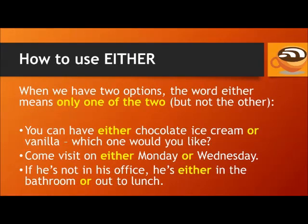First, let's learn how to use either. When we have two options, the word either means only one of the two, but not the other. For example: you can have either chocolate ice cream or vanilla — which one would you like? Come visit on either Monday or Wednesday. If he's not in his office, he's either in the bathroom or out to lunch.